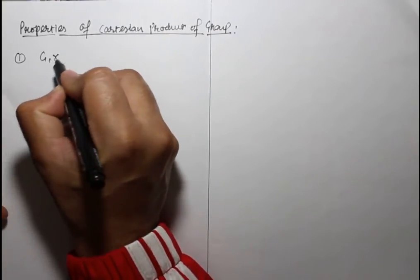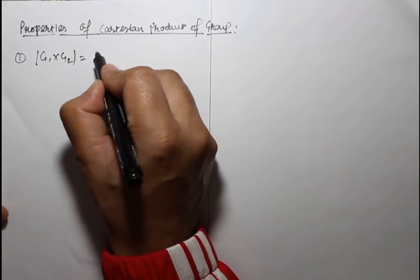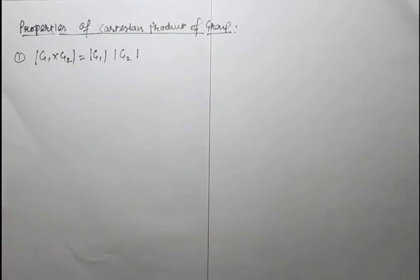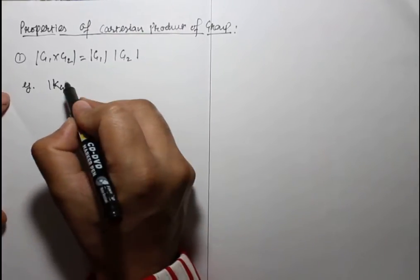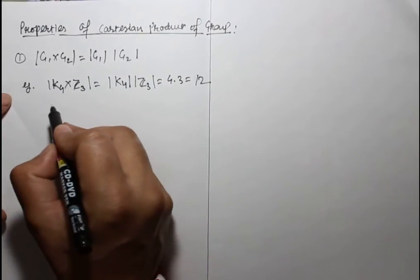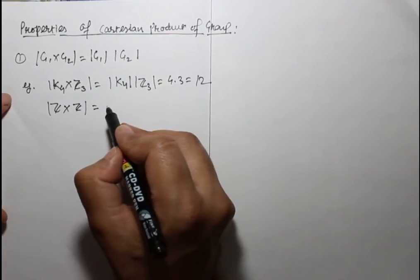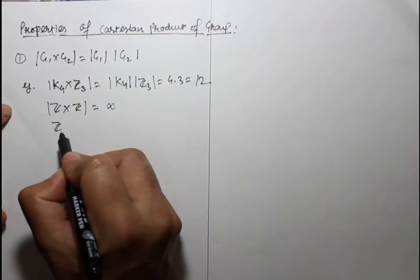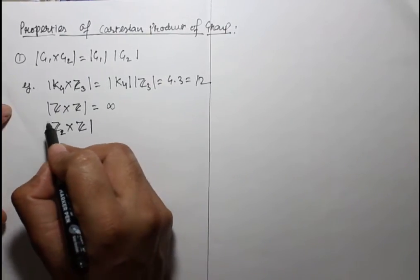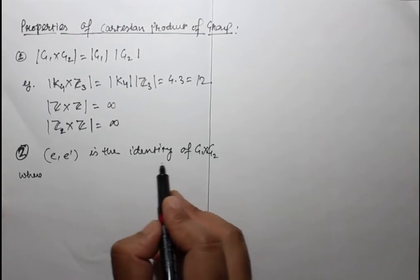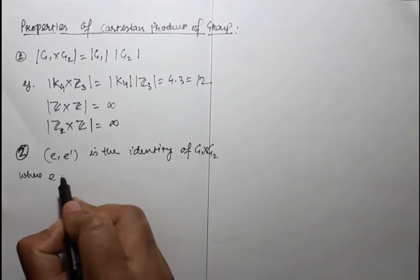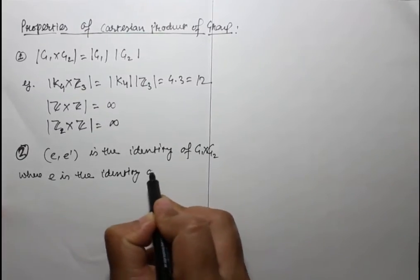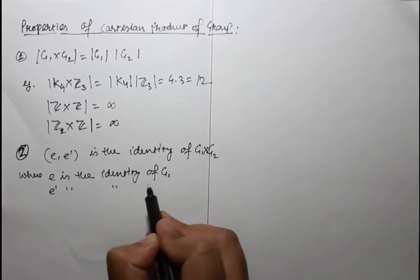Properties of the Cartesian product of groups. Property 1: The order of G1 cross G2 equals the order of G1 times the order of G2. If one of them is infinite, then the Cartesian product group is infinite. For example, Z cross Z has infinite order, and Z2 cross Z also has infinite order.